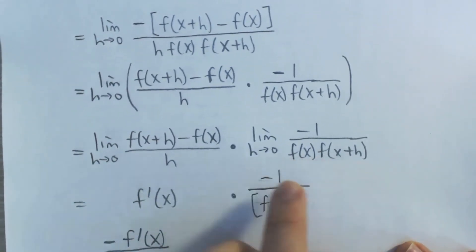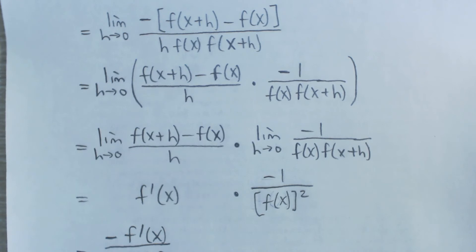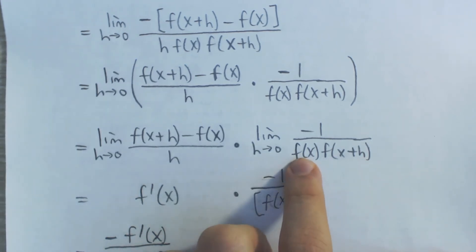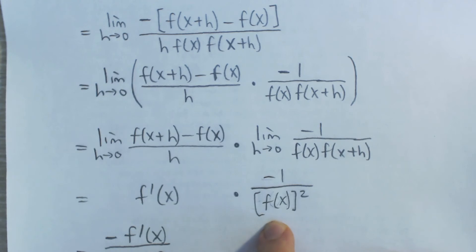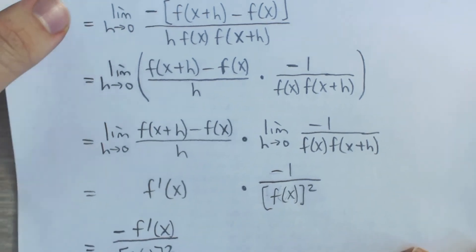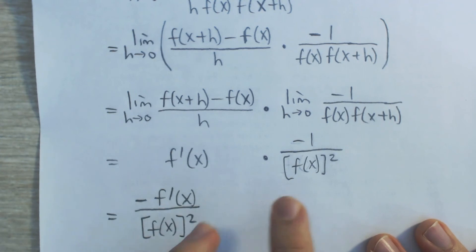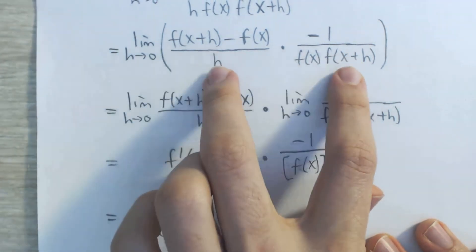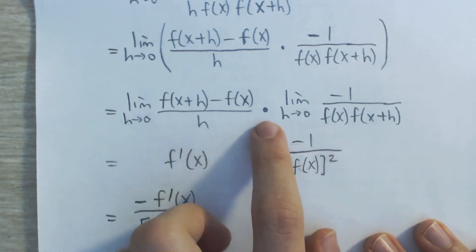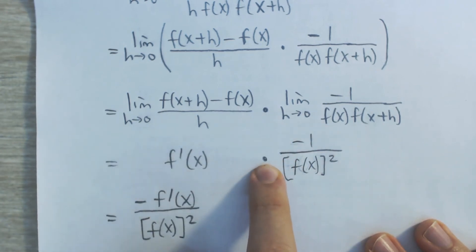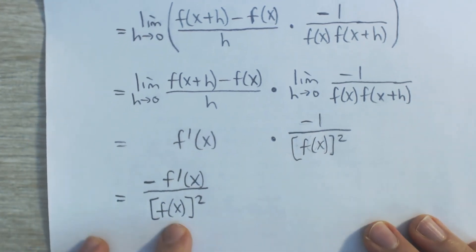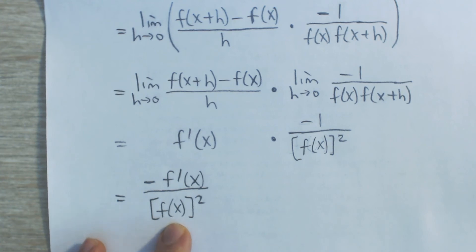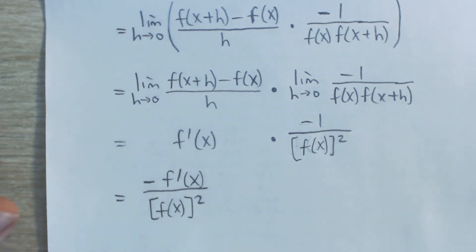For the right-hand limit, there's no reason we can't just plug in h equals 0. When we do that, we get f of x times f of x plus 0 — in other words, f of x again — so that's f of x squared. Combined with the negative 1 in the numerator, we get f prime of x times negative 1 over f of x squared, which gives us negative f prime of x over f of x squared — exactly our final answer.